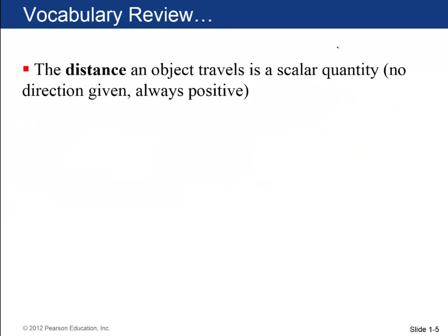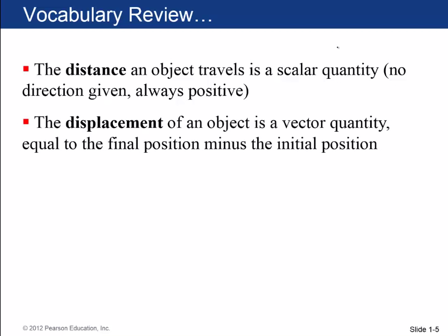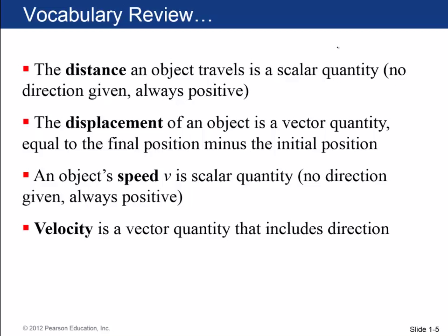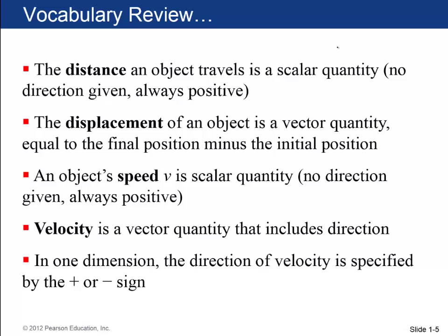Now's a good time to review vocabulary. The distance an object travels is a scalar quantity — no direction — and it's always positive; you can't travel a negative distance. But displacement is a vector quantity, meaning the plus or minus sign indicates its direction. An object's speed is found from distance over time — again a scalar, can't be negative. But velocity can be positive or negative depending on direction, so it's a vector. In one dimension, plus or minus signs indicate direction of displacement or velocity.